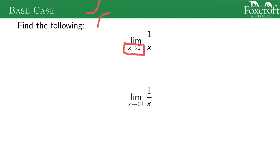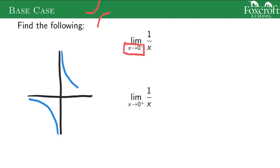For this one, let's think about what the graph of 1/x looks like. From this picture, you can probably guess that the limit from the left of zero — we're in the region where all the y-values are going down forever — so the answer is negative infinity. And then from the right, just on the right side of zero, all the y-values are going upward forever, and we get positive infinity.